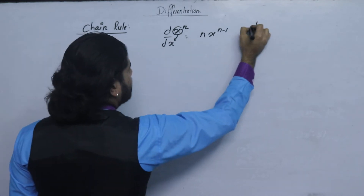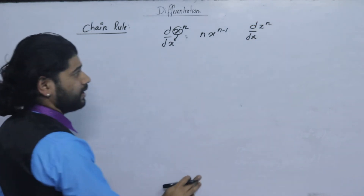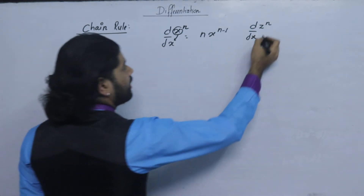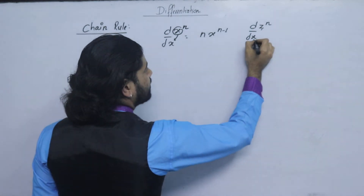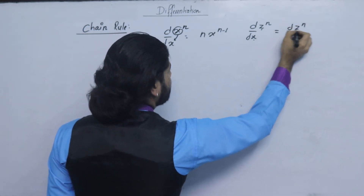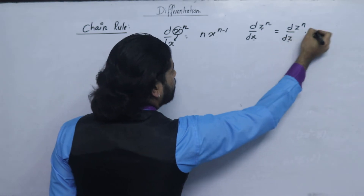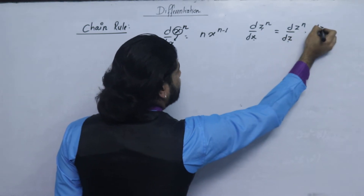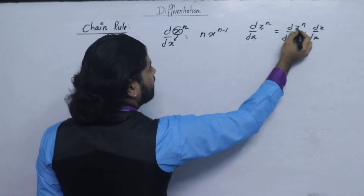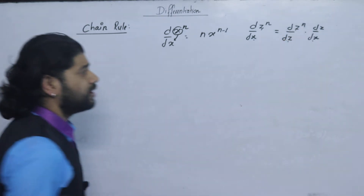The differentiation of z to the power n with respect to x. When you check the power n, this is different than x to the power n with respect to x.